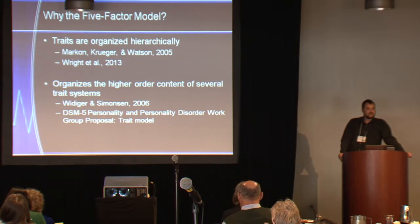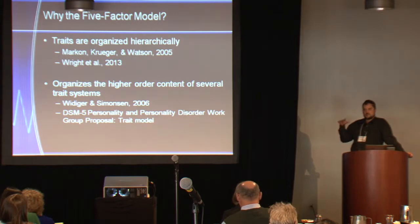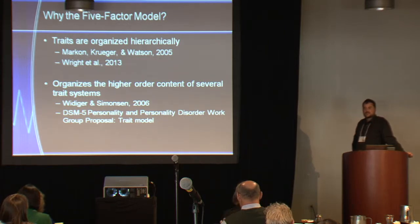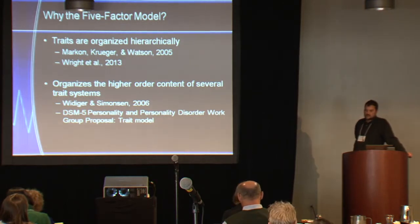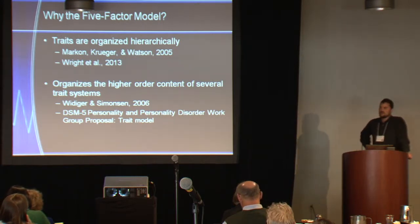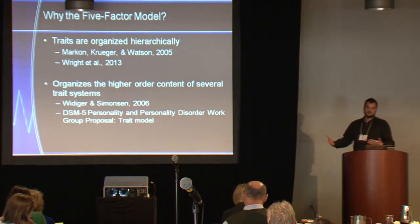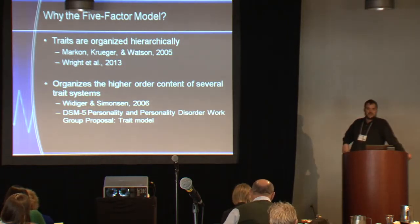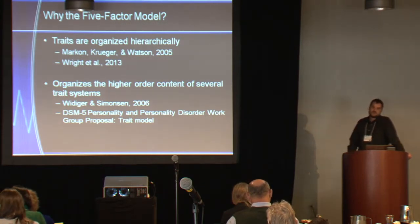You might ask, why the five-factor model? On one level, I don't think it matters very much in the sense that Aidan described how personality traits are organized hierarchically — you could think about the big two, big three, big four, big five, big seven, whatever. I do think it's useful to organize the higher content of these systems around the big five. Tom Whittaker and Eric Simonson had a paper showing that many other trait models can be organized as variants of the big five. There is a consensus in basic personality science that five is a fairly useful way to enter into that hierarchy.